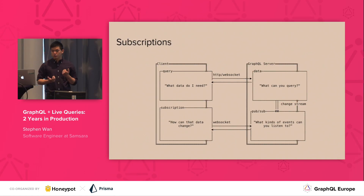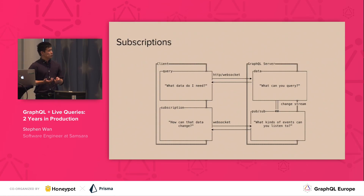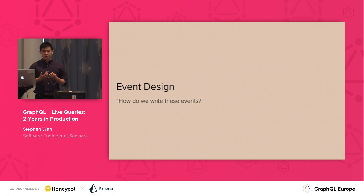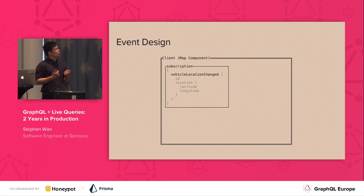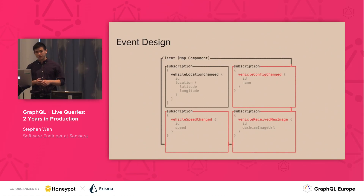Stepping back, we can look at where responsibility lies. On the client side, it needs to ask what data do I need to render this view, but now it's also in charge of understanding how that data can change and registering whatever subscriptions it needs. On the server side, we need to expose the different types of events that might exist. This is interesting because the client now has to think about new state — what events it cares about. We might be interested in reactivity for all different parts of the query: when speed changes, when the dash cam receives new images — all of these need to be instrumented.